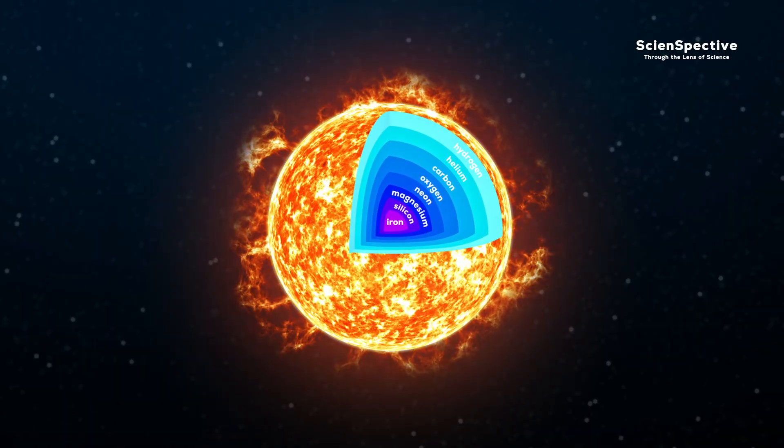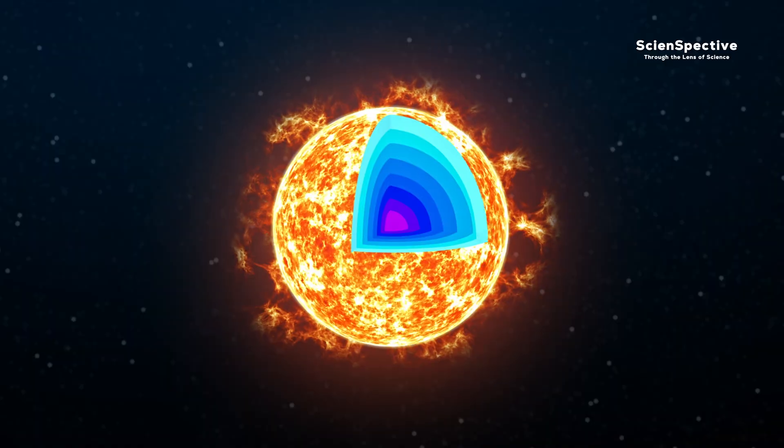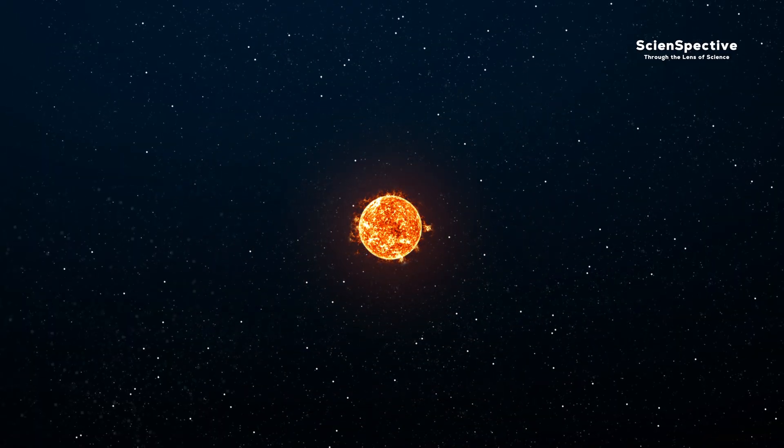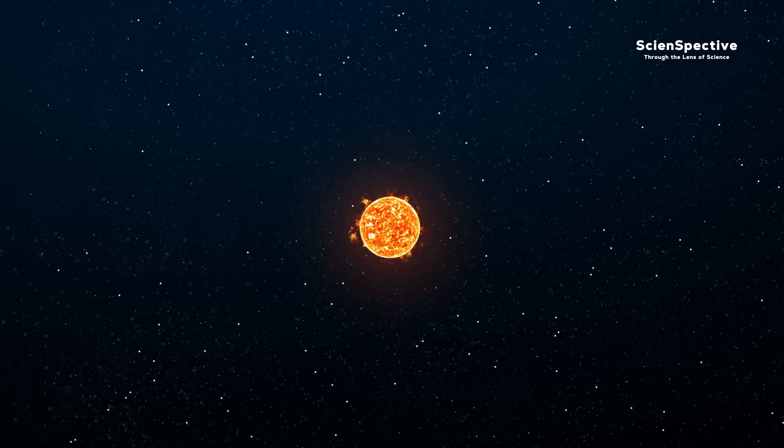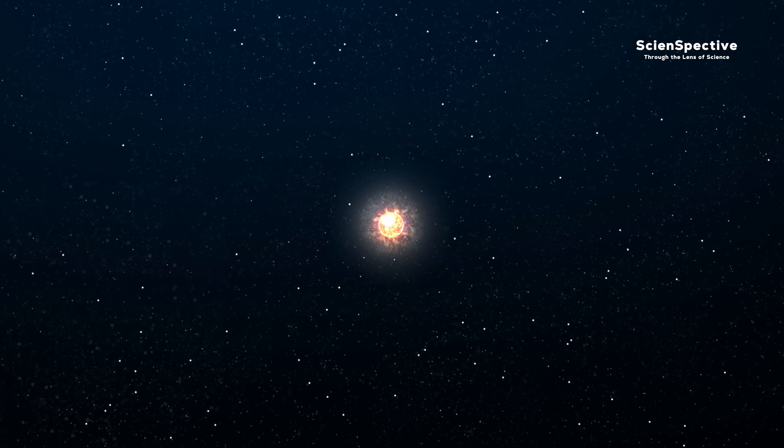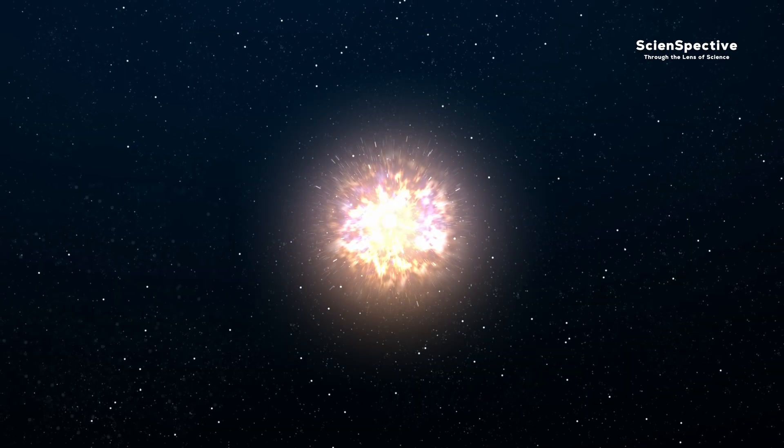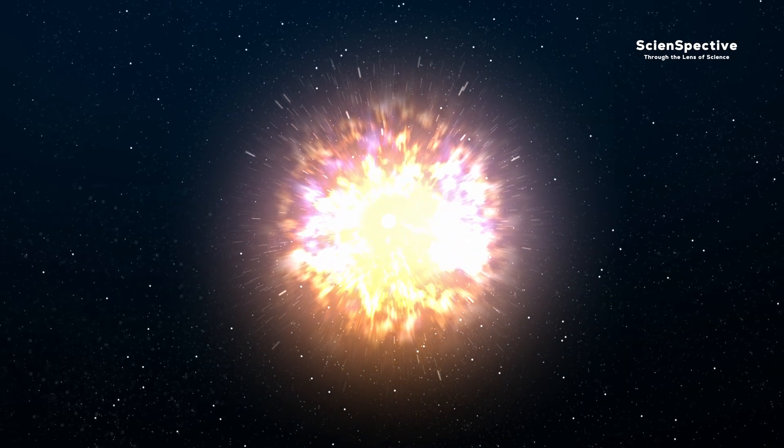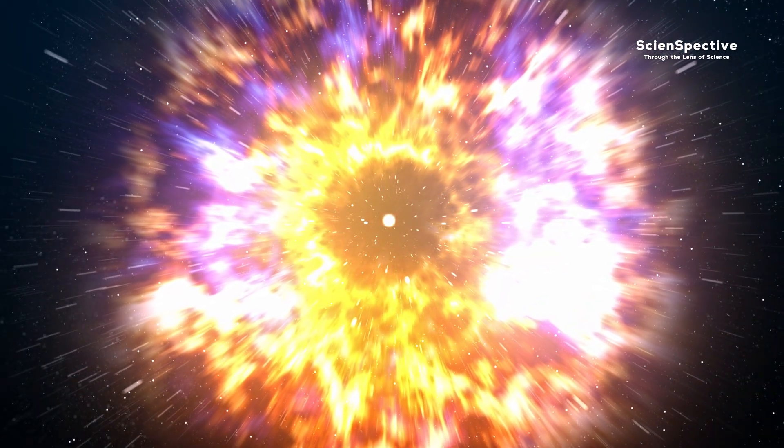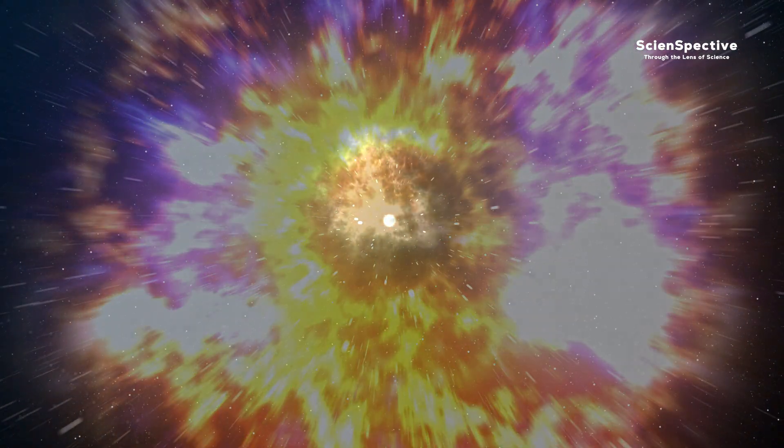Iron cannot fuse further inside the star. It doesn't generate more outward energy. At this very moment, gravity wins. The star collapses into itself in just a fraction of a second. Its outer layers bounce off the inner core at nearly the speed of light, resulting in one of the most powerful phenomena in the universe. The supernova explosion.